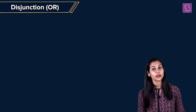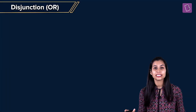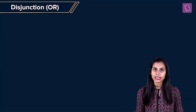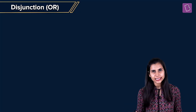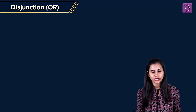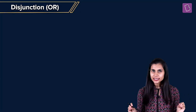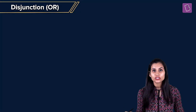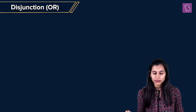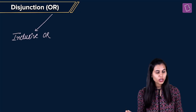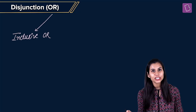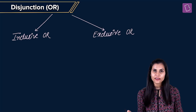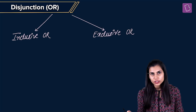Now, next up we have disjunction — that is, OR. But before diving into the detailed discussion, there are two types of disjunctions, or two types of OR: first, inclusive OR, and then exclusive OR.